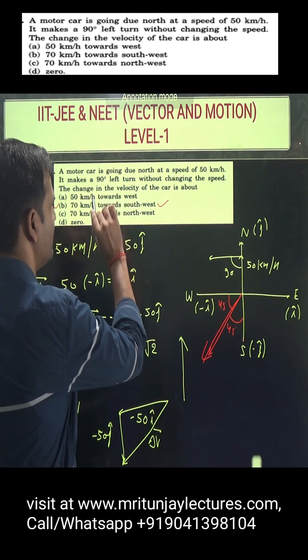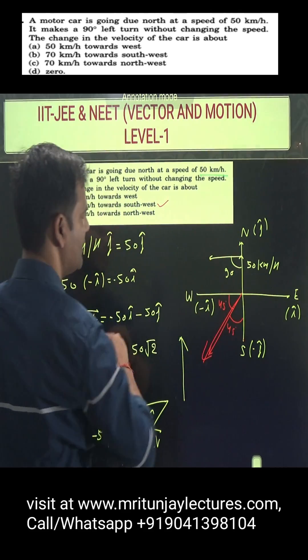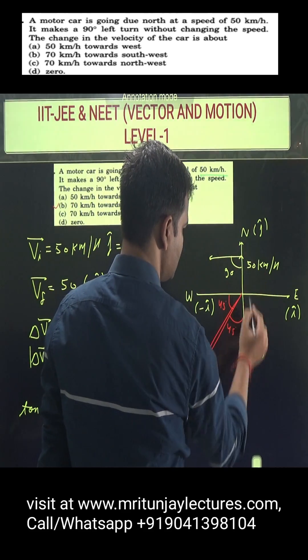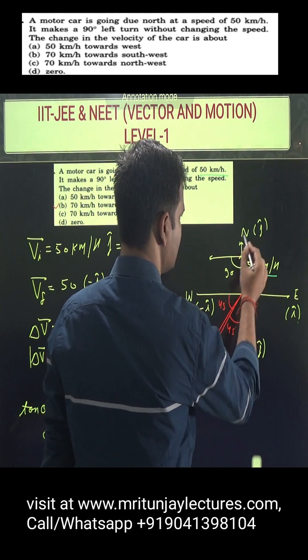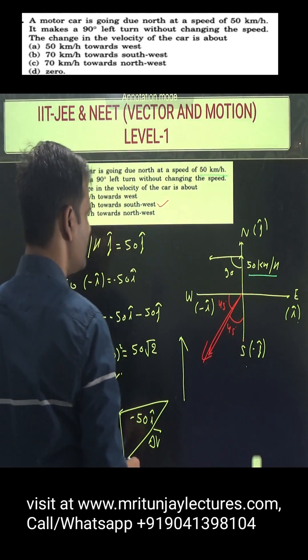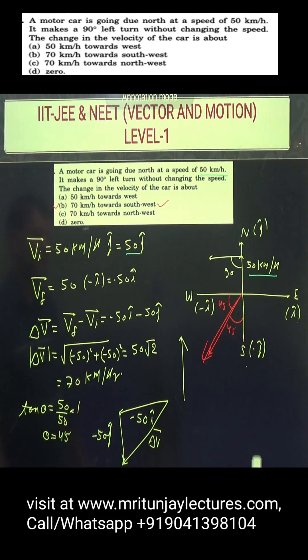A motor car is going due north at a speed of 50 kilometer per hour. This is north here, south here, east here, west. 50 kilometer per hour is going north, so it is written as 50 kilometer per hour j, or 50 j, with direction.